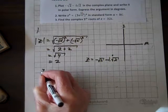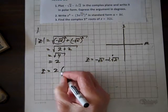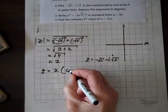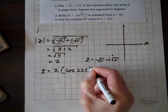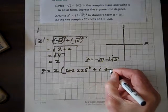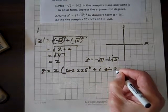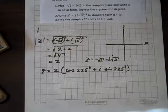So then z equals, in polar form, 2 times the cosine of the argument, which is 225 degrees, plus i sine of 225 degrees. And we've done it.